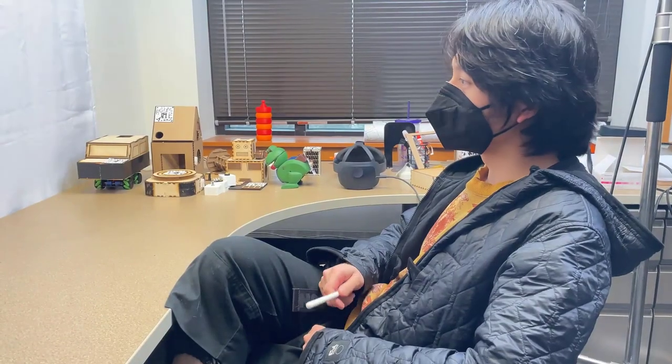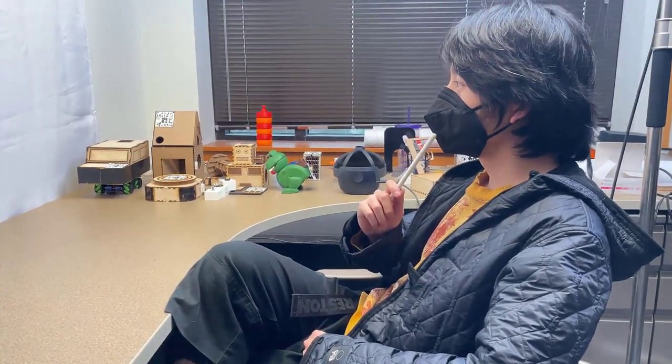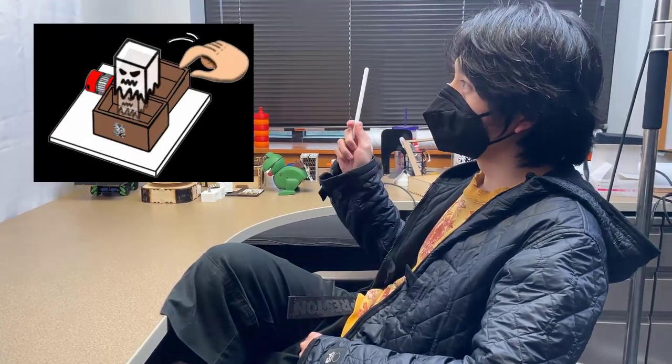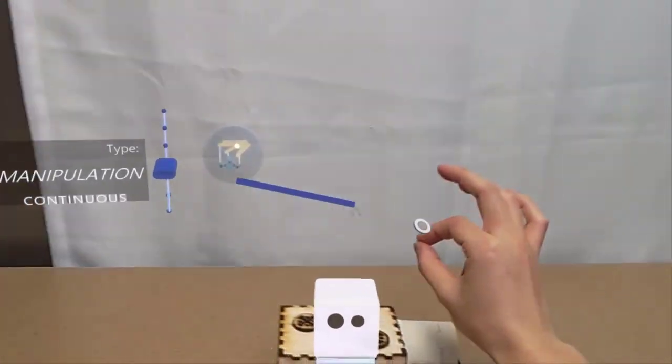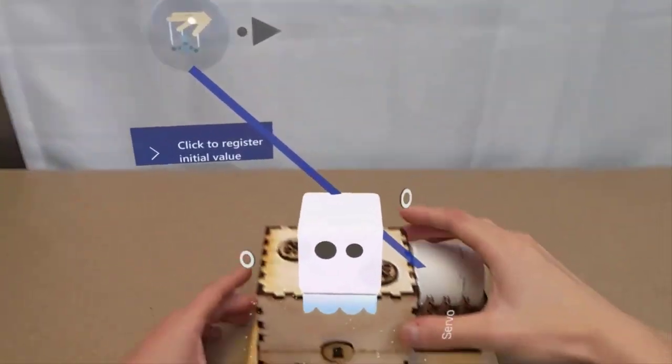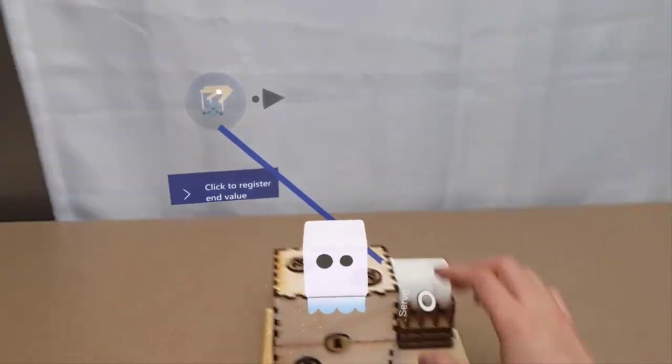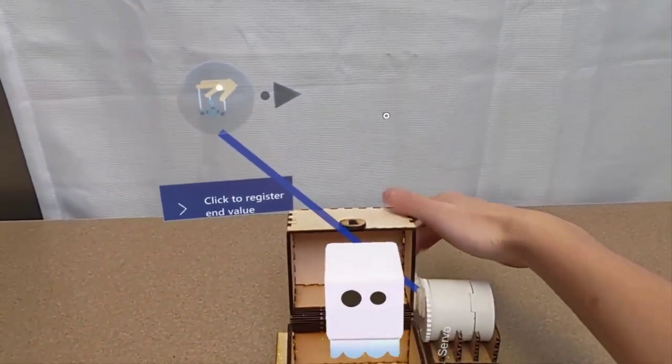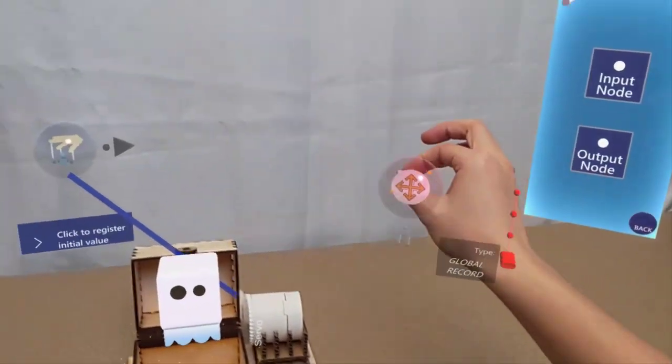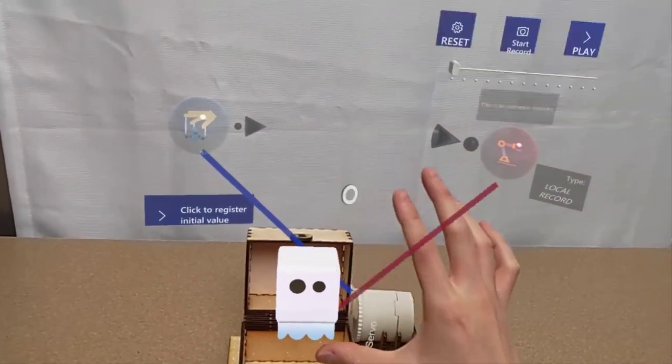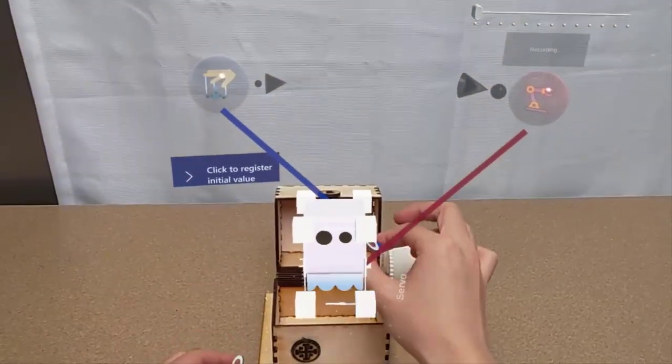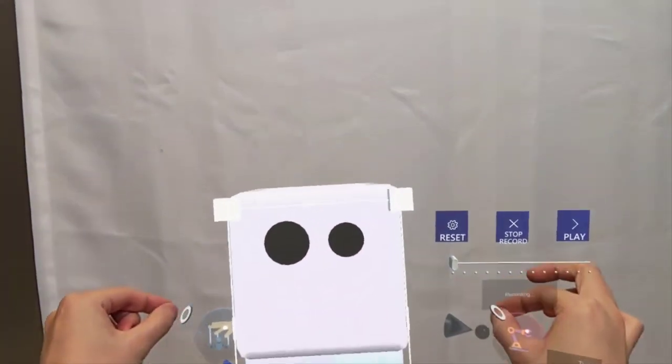The user also wants to dynamically control a virtual ghost by manipulating the chest. Similarly, the user selects the continuous manipulation of the chest as input and demonstrates this action. The user then chooses the global movement virtual ghost as output. Its animation is created by directly manipulating its scale and position.